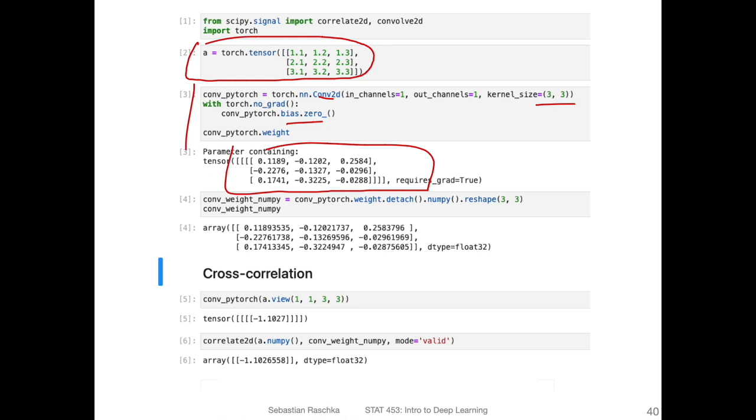When I apply this, I'm converting it to NumPy so I can use the cross-correlation function and the convolution functions implemented in scipy, because it expects NumPy arrays. This is the PyTorch weight inside the convolutional operator, and here this is the NumPy version. It's exactly the same values, just a little bit more precision because this is 32-bit precision and this is 64-bit precision.